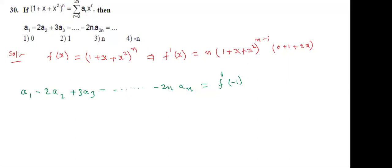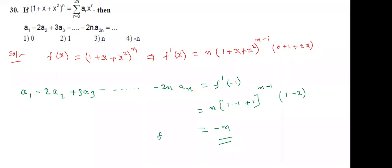Find F'(-1): substitute x = -1. F'(-1) = n(1 - 1 + 1)^(n-1) times (1 + 2(-1)) = n(1)^(n-1) times (-1) = -n. So the answer is -n. The shortcut formula here is F'(-1). Correct answer is option 4.